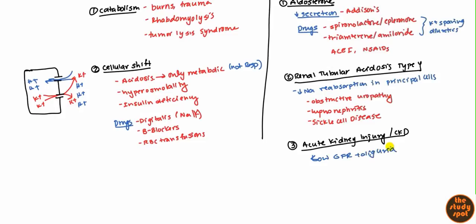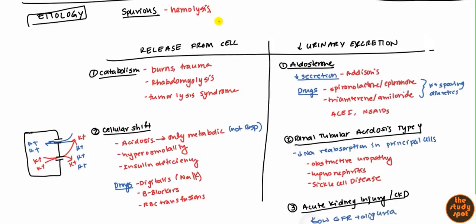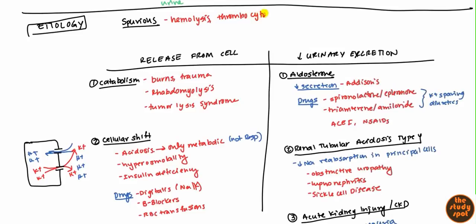Before moving on, there are spurious causes — also known as pseudo-hyperkalemia. These are situations where the patient actually has a normal potassium level, but there's a problem with the lab findings or how the blood was drawn, making it seem like hyperkalemia. The first major one is hemolysis in the tube — that releases intracellular potassium. Thrombocytosis and leukocytosis can also cause this. The tourniquet can cause cell ischemia if left on too long. If you suspect this, just take another blood reading.